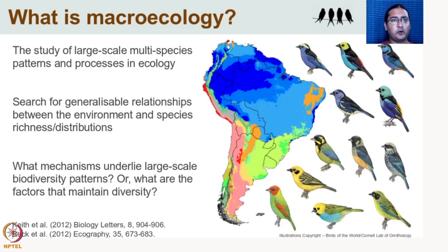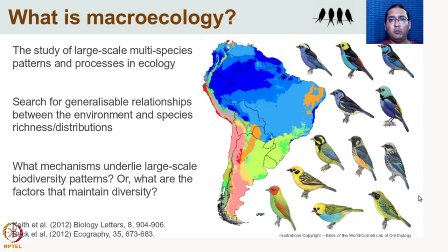Macroecology is the study of very large-scale, multi-species patterns and processes in ecology. It searches for relationships between the environment — for example, temperature and rainfall — and species richness distributions that can be generalized. So it's searching for relationships like: wherever temperatures are high, you have high species richness; wherever temperatures fluctuate more, you have lower species richness. It searches for explanations for why we see these large-scale species richness and biodiversity patterns.